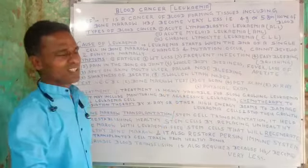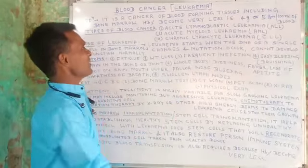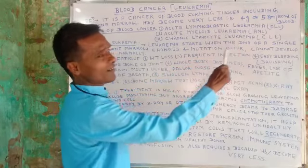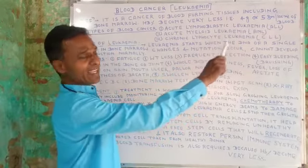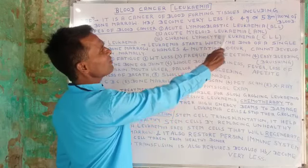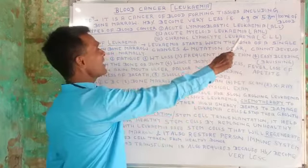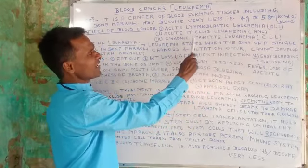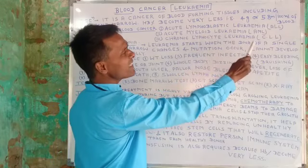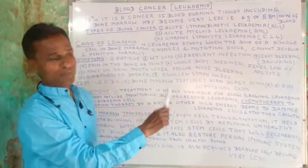Now, types of blood cancer. There are three types of blood cancer. First, Acute Lymphoblastic Leukemia (ALL). Second, Acute Myeloid Leukemia (AML). Third, Chronic Lymphocytic Leukemia (CLL). So these are the three types of blood cancer.